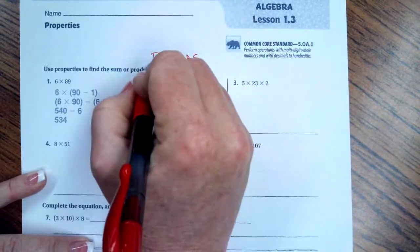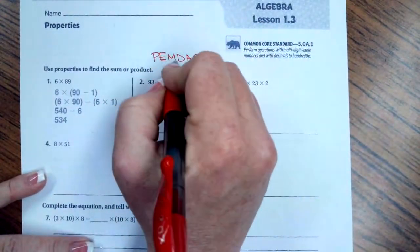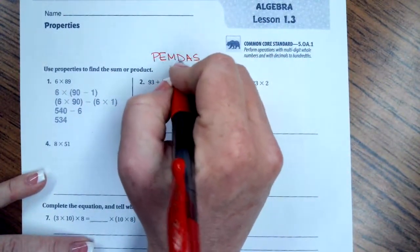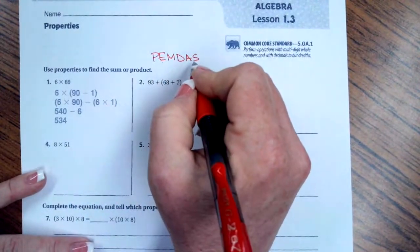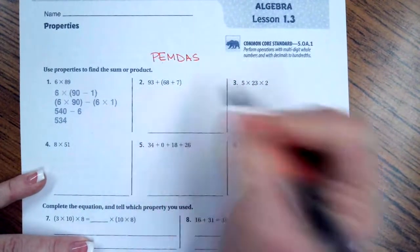PEMDAS is just parentheses, exponents, multiplication and division whichever comes first going left to right, and addition and subtraction whichever comes first going left to right.